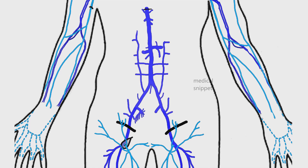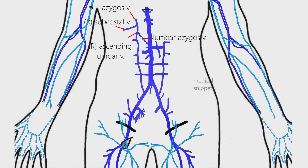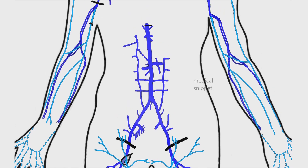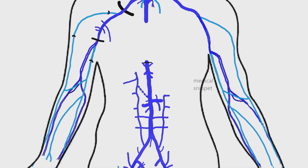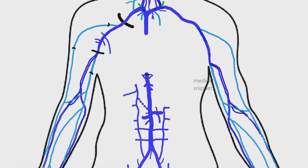The right subcostal vein joins with the right ascending lumbar vein to form the azygos vein. Sometimes the azygos vein arises from the back of the inferior vena cava as a lumbar azygos vein. The azygos vein ascends in the posterior mediastinum, and opposite to T4 vertebra, it arches forward and drains into the superior vena cava.